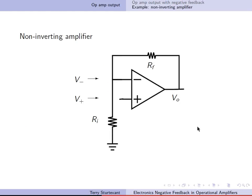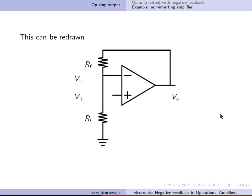For a non-inverting amplifier, V minus is here, V plus is here. So this can be redrawn.